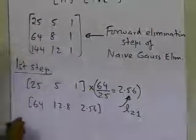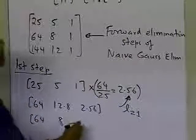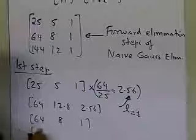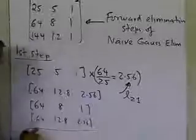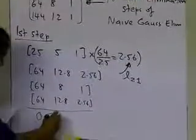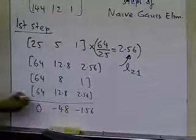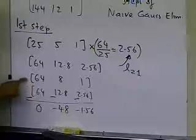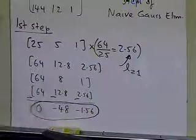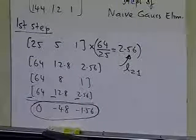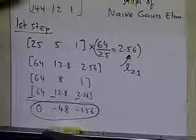Subtracting [64, 12.8, 2.56] from the second row [64, 8, 1] gives [0, −4.8, −1.56]. This becomes my new second row of the coefficient matrix, with the first entry now being 0. So L21 equals 2.56 is established as the multiplier at row 2, column 1 of the lower triangular matrix.